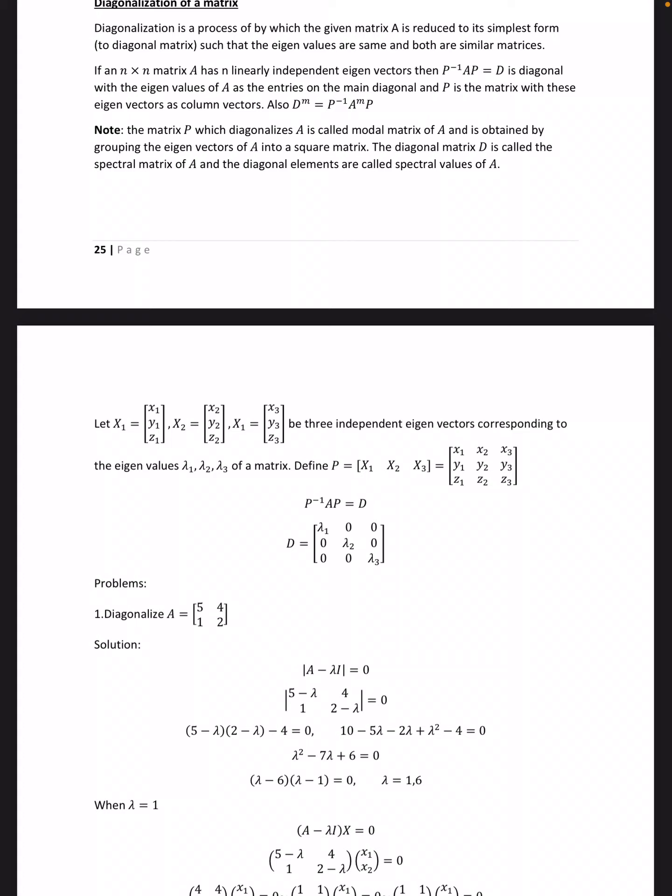Note: the matrix P which diagonalizes A is called the modal matrix of A and is obtained by grouping the eigenvectors of A into a square matrix. The diagonal matrix D is called the spectral matrix of A and the diagonal elements are called spectral values of A.